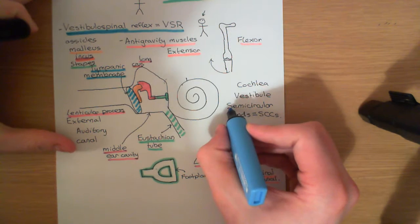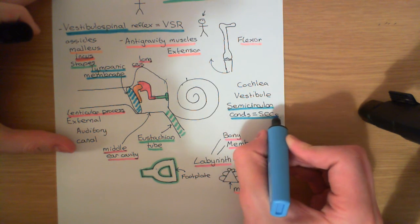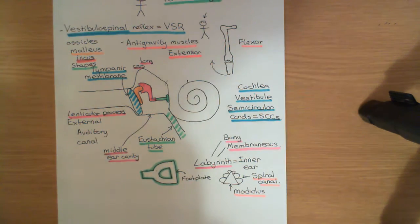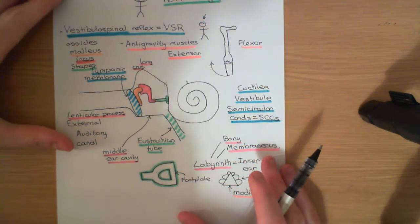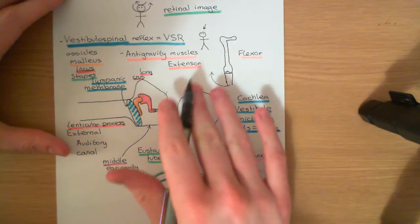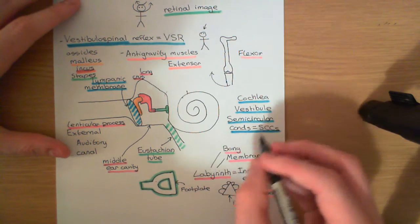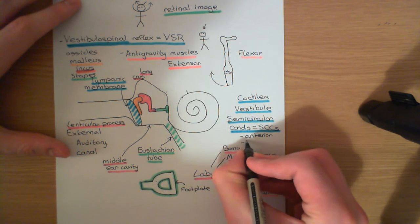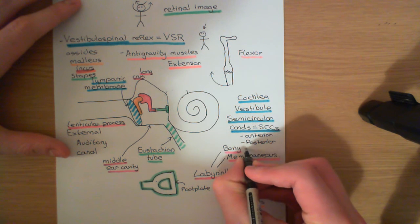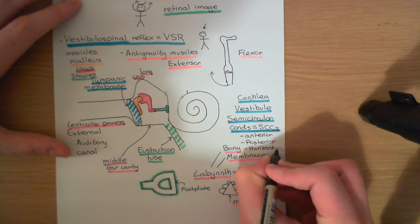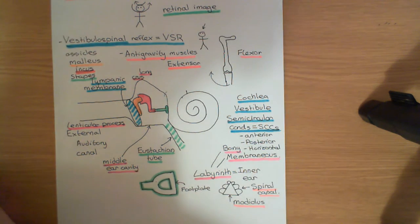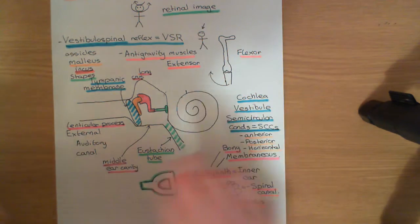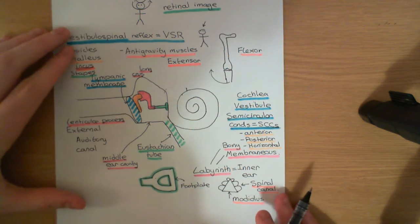There are three semicircular canals on each side, with a mirror image on the left-hand side as well — so you have two vestibular apparatuses, one on each side. The three semicircular canals are: the anterior semicircular canal, the posterior semicircular canal, and the horizontal semicircular canal. The anterior can also be called the superior semicircular canal, and the horizontal can also be called the lateral semicircular canal, but these three names are the main ones we'll use.